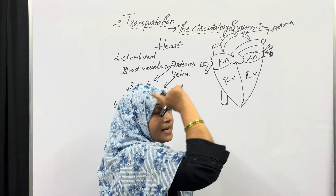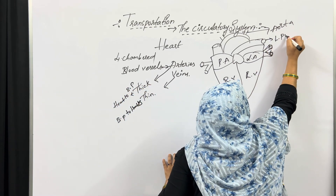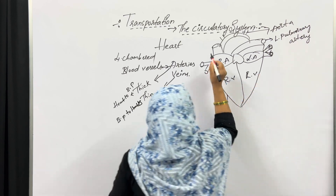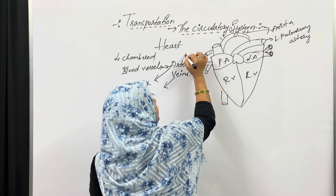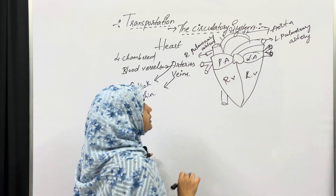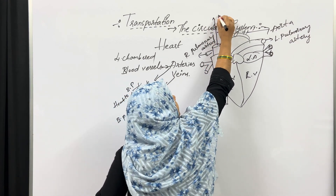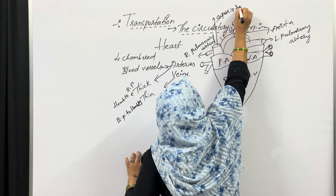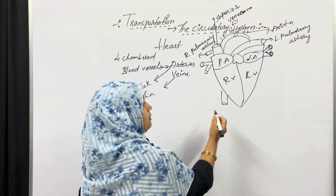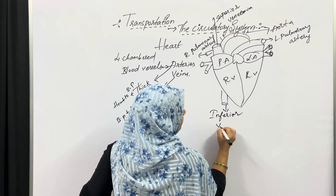The left pulmonary artery is the smaller one. There is also the right pulmonary artery. For the veins, the vein present at the anterior side is called the superior vena cava, and the vein present at the posterior side is called the inferior vena cava.